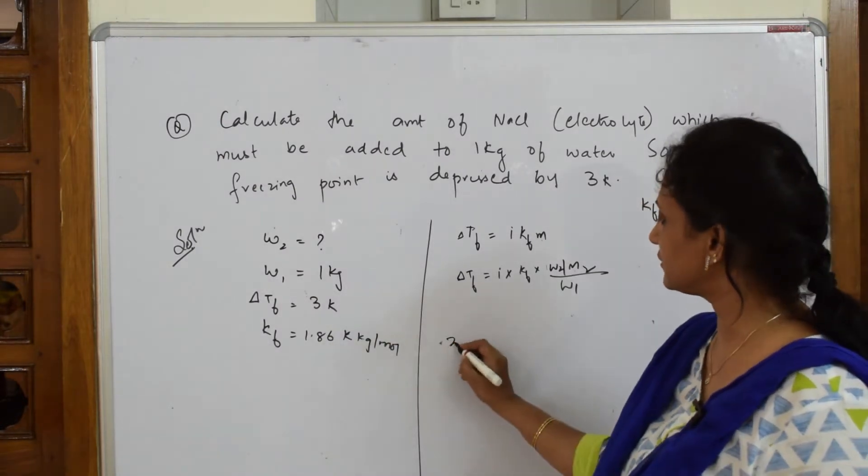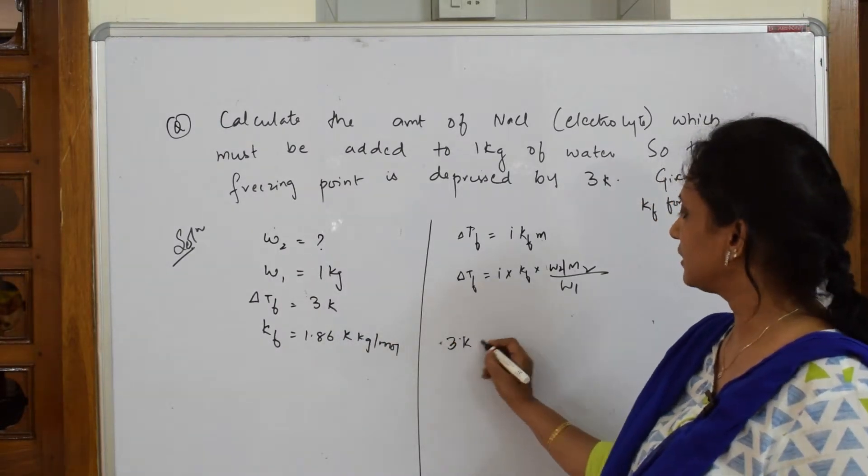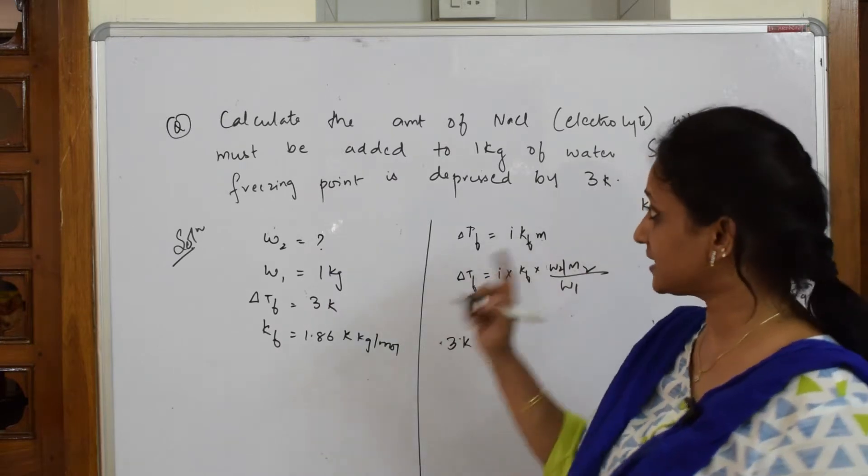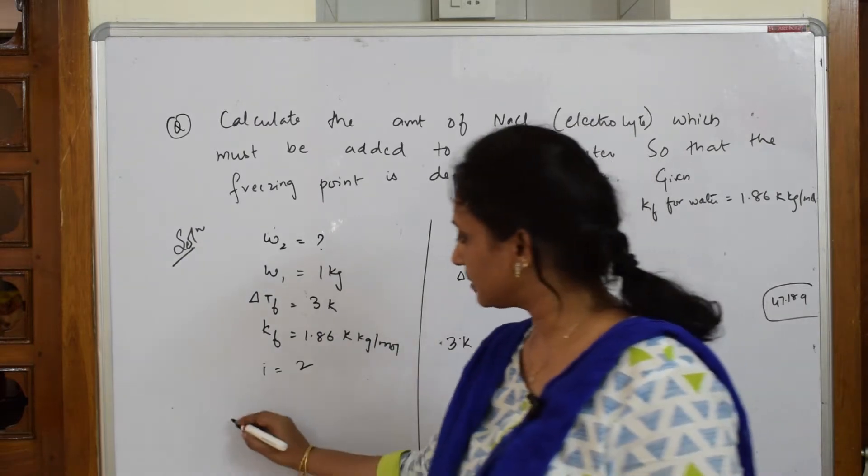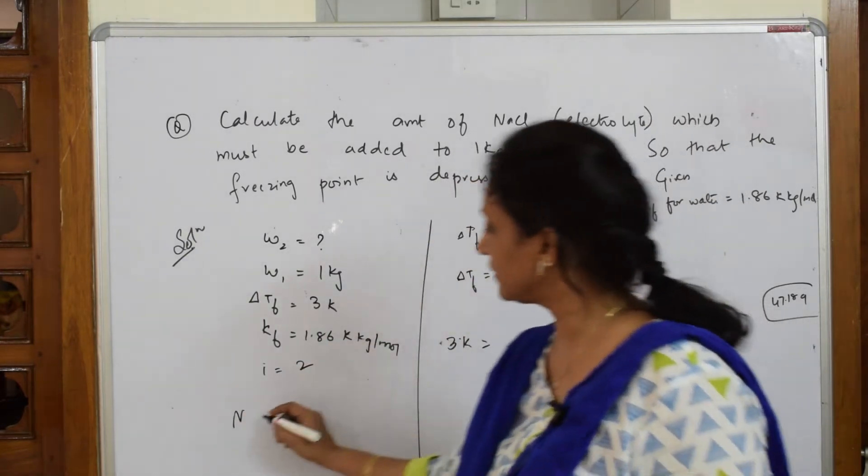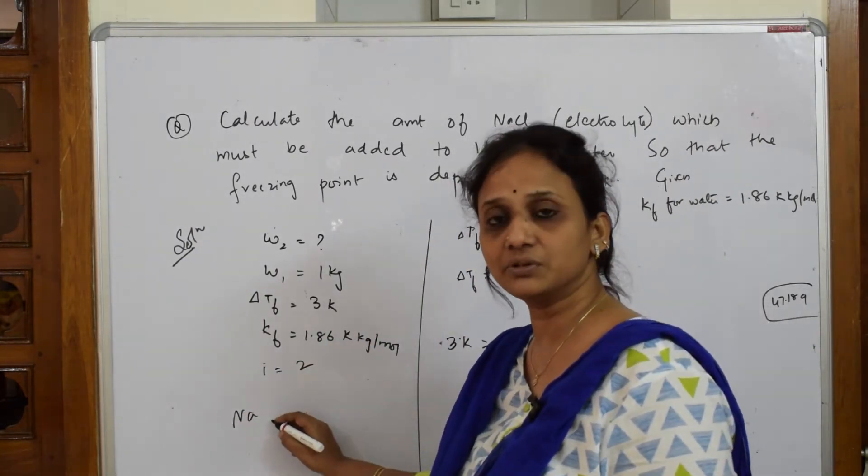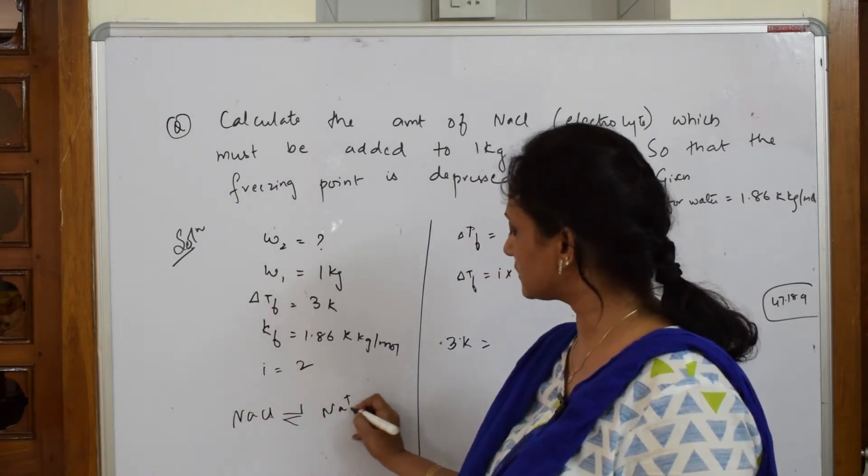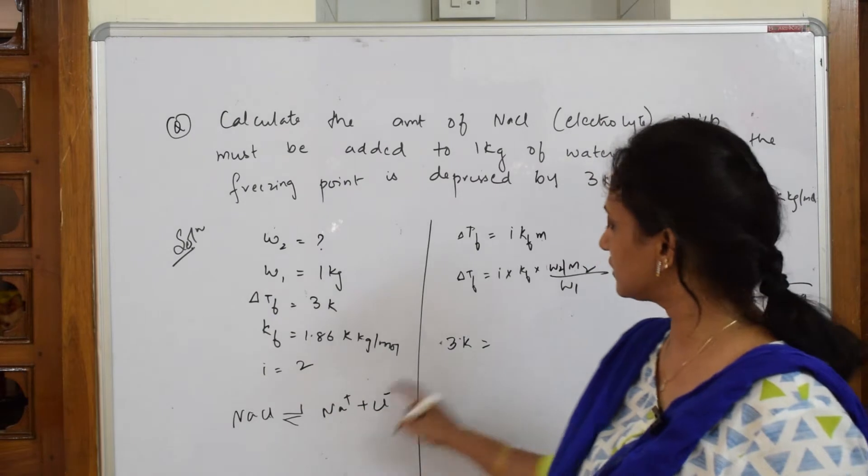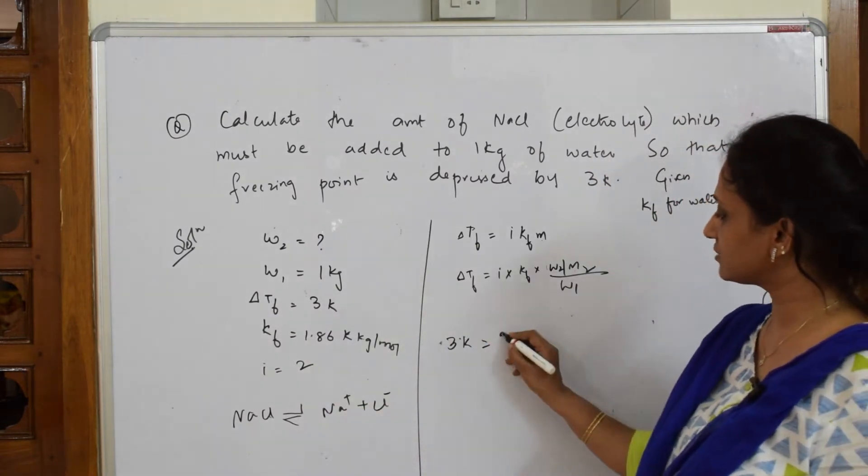ΔTf is 3 kelvin. What is i? Yes, I said i factor for NaCl is always 2. Why? Because NaCl dissociates into Na+ plus Cl-. So 1 plus 1 equals 2, so i factor is 2.